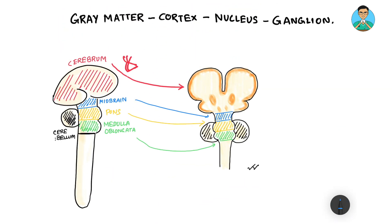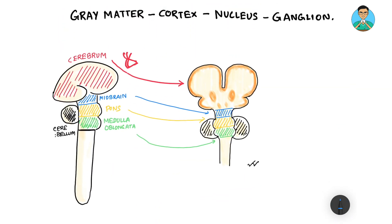Now, gray matter as you can see in this diagram — some gray matter is on the surface, whereas some other gray matter is deep within the brain. The gray matter that remains on the surface is known as the cortex or cortical gray matter, whereas the gray matter that remains buried within the white matter of the brain is known as nucleus.